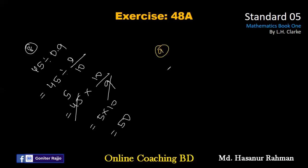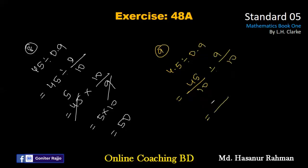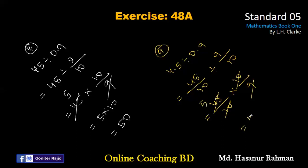Now number nine says 4.5 divided by 0.9. 4.5 actually represents 45 by 10, and 0.9 represents 9 by 10. So we have 45 by 10 multiplied by 10 by 9. We can cancel the 10s, and 45 divided by 9 is 5. So the answer should be 5.